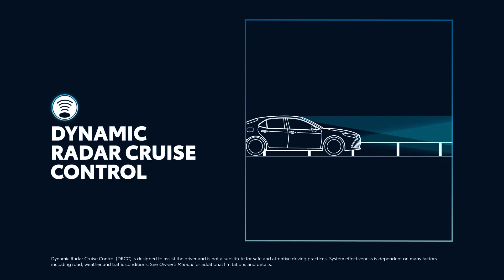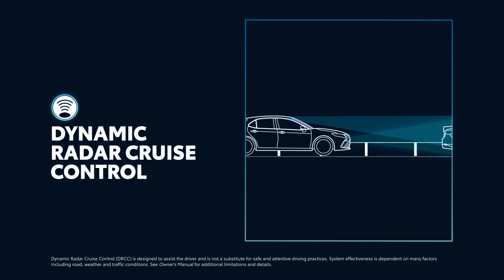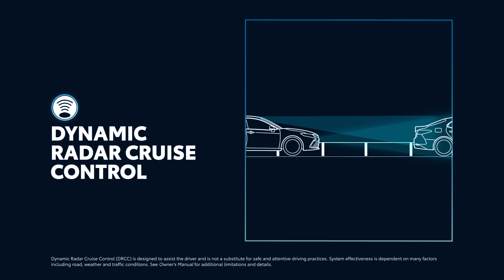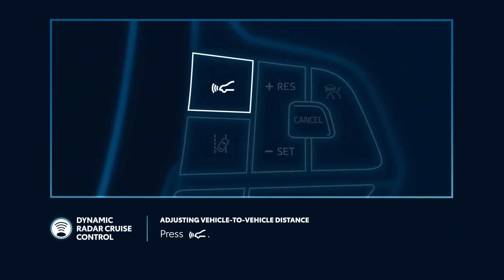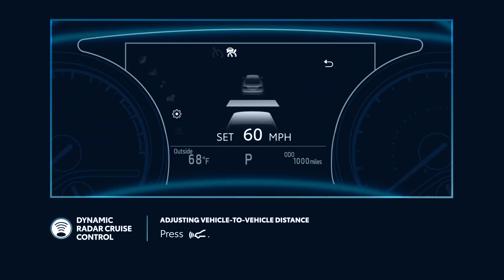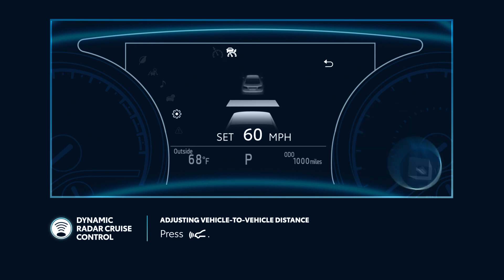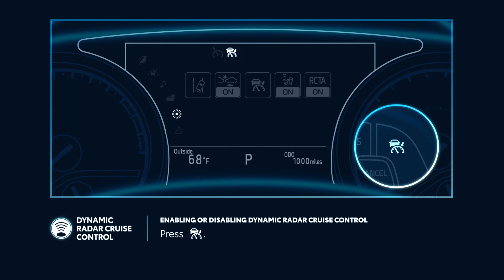Dynamic Radar Cruise Control, or DRCC, is designed to adjust your speed, helping you maintain a preset distance from the car in front of you. To adjust this distance, simply press the Vehicle to Vehicle Distance button to cycle between Long, Medium, and Short. Note that distance can still vary in situations like downhill slopes. To turn the system on, press the DRCC button once, and to turn it off, press it again.